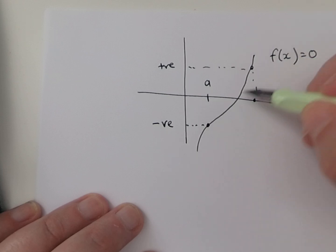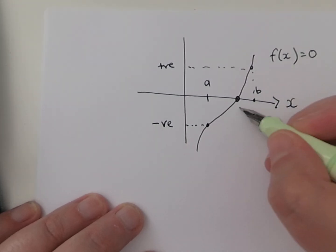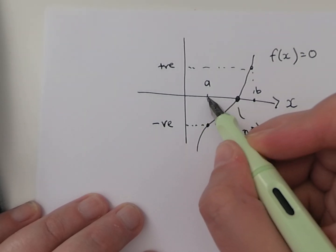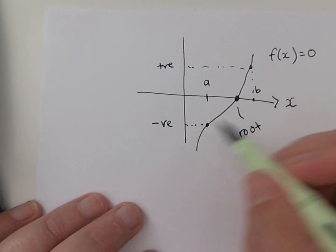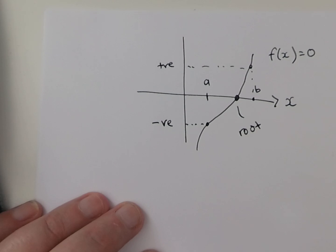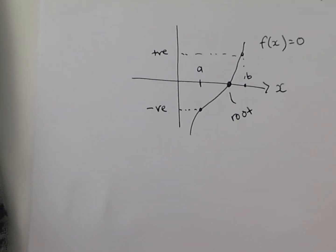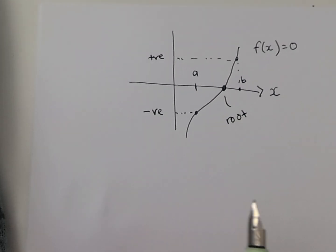It must travel through the x-axis somewhere, and where it travels through the x-axis, where it's equal to zero, that is our solution, that's our root. So we can say that we know there's a solution between this point and this point. We have a range where there's a solution, and this really helps us when we have solutions that are very complex, that are not whole numbers, something with a very long decimal. We can narrow down the range in which we know the solution occurs.